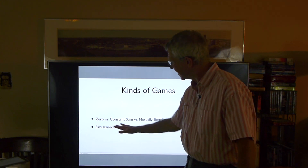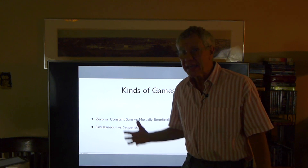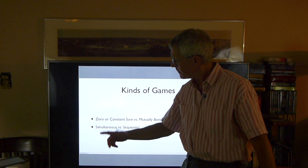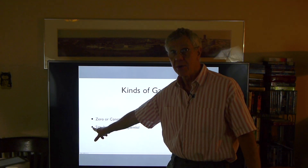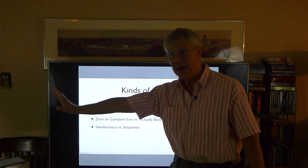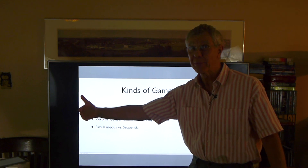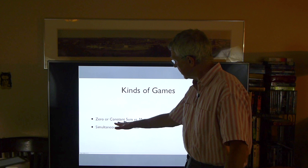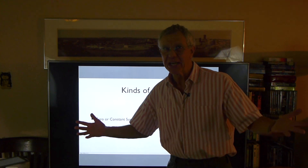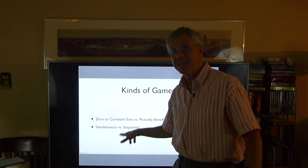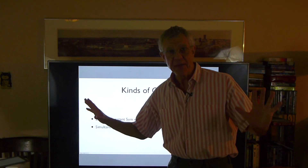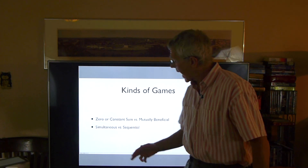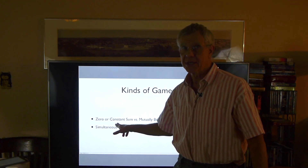The idea is that no matter what the result of the play of the game, there's a fixed quantity to be allocated among the players. If that quantity is zero — that is to say, if one person gets a positive result only to the extent that other people get a negative result — it's a zero-sum game. But sometimes, as in budget negotiations, it's a constant-sum game. We know what the total of the budget is, and different groups fight over their part of the pie.